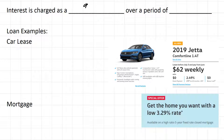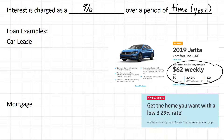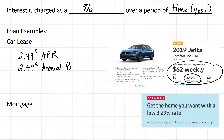Interest is charged as a percentage and it's always given over a period of time — most often one year. Here we've got an advertisement for the leasing of a Jetta. If you look at the fine print, it says two point four nine percent APR. APR stands for Annual Percentage Rate, so you're going to be charged two point four nine percent per year. The 60 months means you're signing up for 60 months to lease that car.